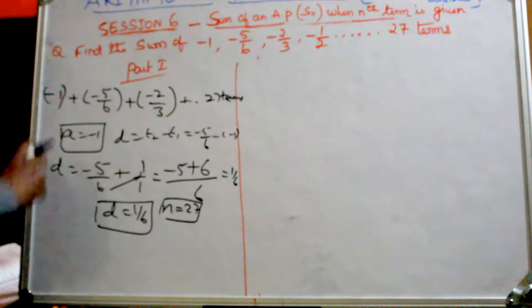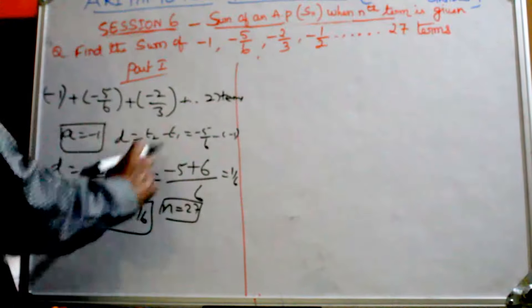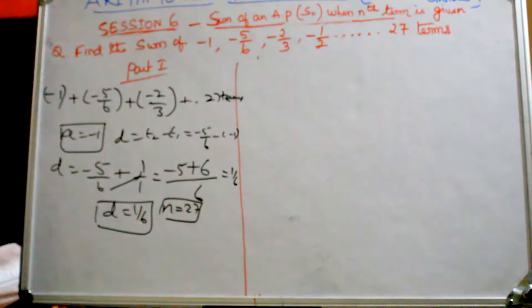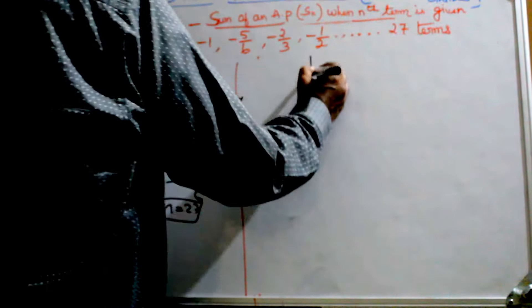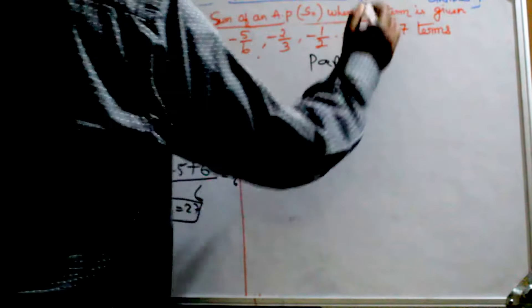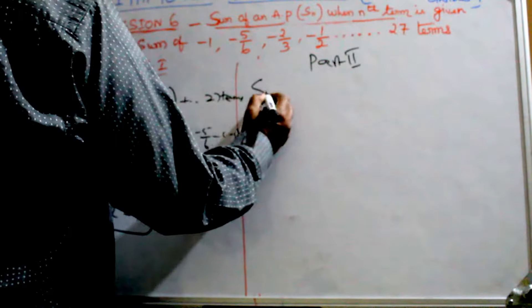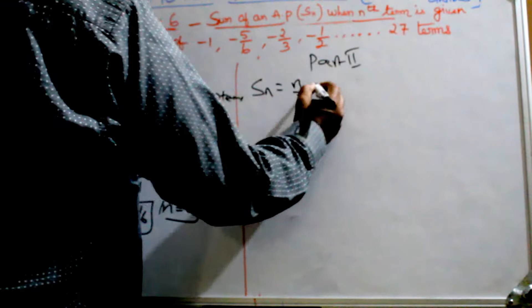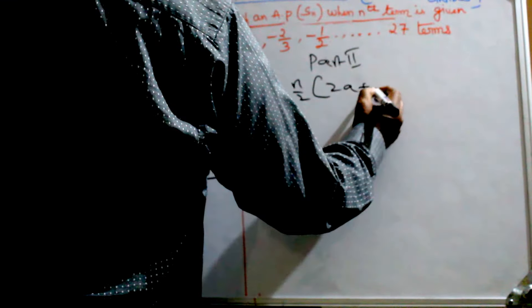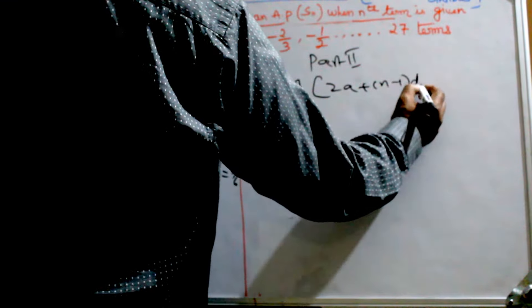You have to get A from this, D from this, and N from this. Now write the formula. That's part 2. Sn equals n/2 times [2A + (n-1)D].